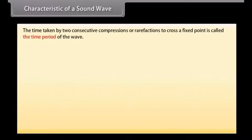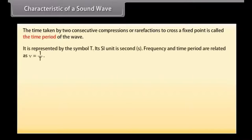The time taken by two consecutive compressions or rarefactions to cross a fixed point is called the time period of the wave. It is represented by the symbol T. Its SI unit is second. Frequency and time period are related as nu is equal to 1 upon T.